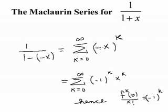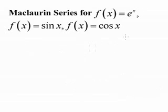So we can see that in this example, the kth derivative of the function at 0 over k factorial is just negative 1 to the k, for the function f of x equals 1 over 1 plus x.